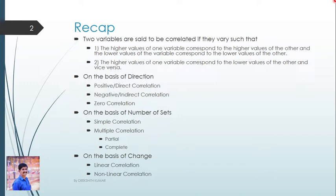We have studied about correlation. Basically, the two variables are said to be correlated if they vary such that the higher value of one variable corresponds to the higher value of another variable, or the lower value of one variable corresponds to the lower value of the other, or the higher value of one variable corresponds to the lower value of the other, and vice versa. If one variable increases and the other also increases, or if one variable decreases because of the other, or if two variables mutually increase or decrease, then they are said to be correlated.